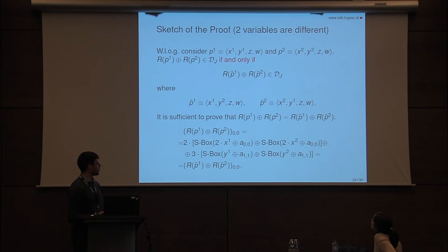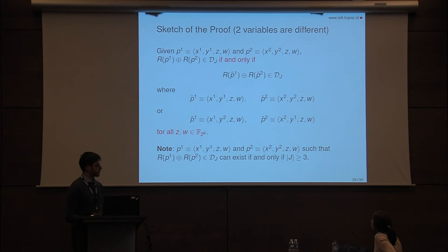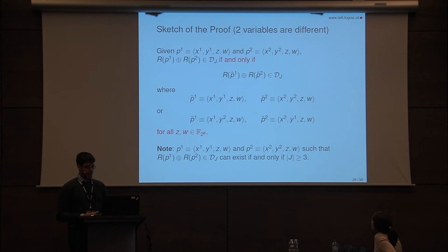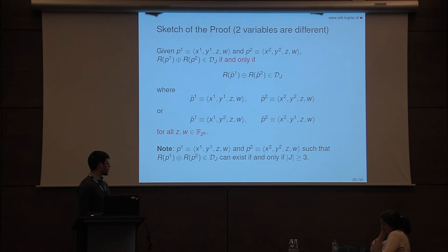Consider the case where two variables are different: P_1 and P_2 defined with Z and W equal. It is possible to prove that P_1 and P_2 belong to the same coset of a diagonal space after one round if and only if P̃_1 and P̃_2 have the same property, where P̃_1 is defined by (X_1, Y_2) and P̃_2 by (X_2, Y_1) — a different combination of the generating variables. The key observation is that this difference is independent of Z and W. So we have a stronger result: if P_1 and P_2 are as before, they belong to the same coset of a diagonal space after one round if and only if P̃_1 and P̃_2 have the same property, where Z and W can take any possible values. The number of collisions is thus a multiple of 2^17: a factor 2 from the variable combination, and a factor 2^16 from Z and W taking any values.